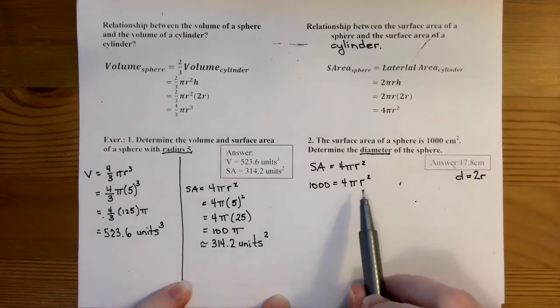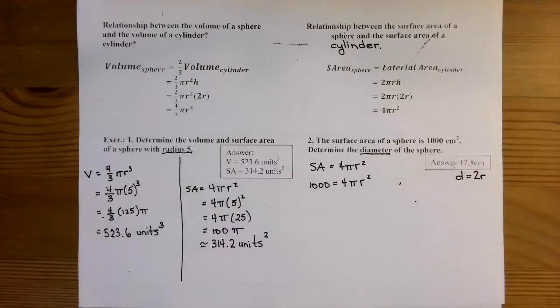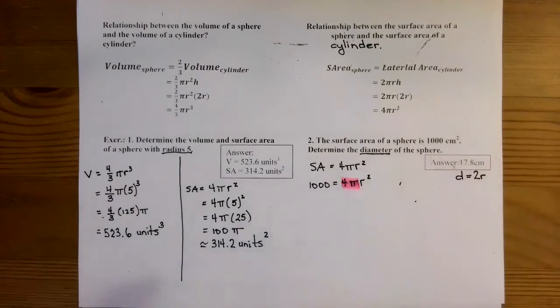And we don't know r, but we can find it. So what we want to do first is we're going to take this whole 4π, we're going to take the 4π to the other side, because if you remember, this is 4 times π times r².